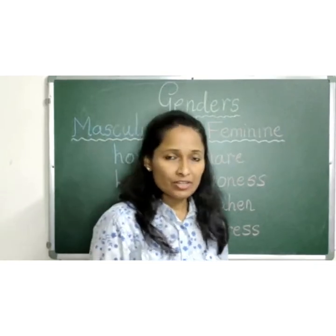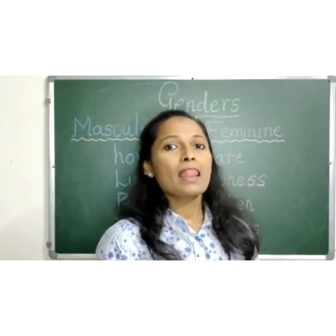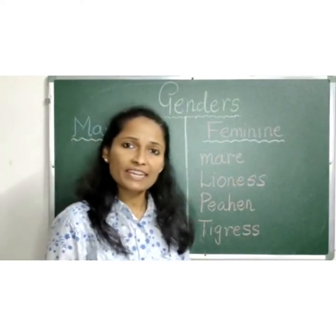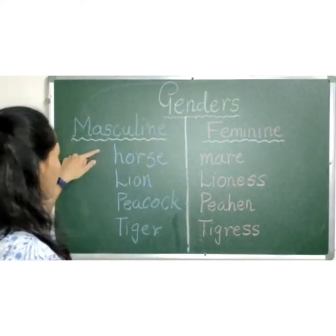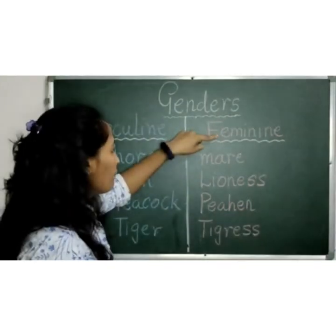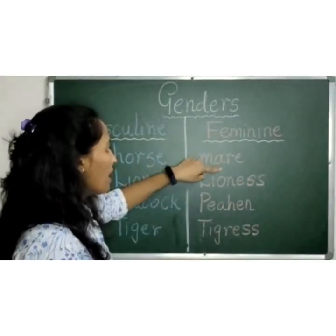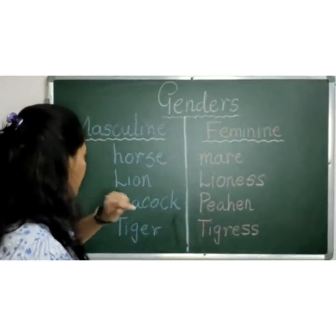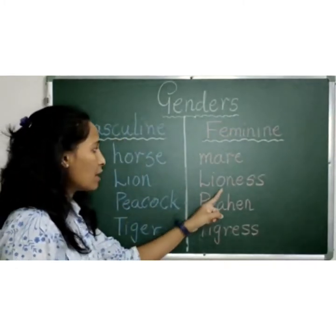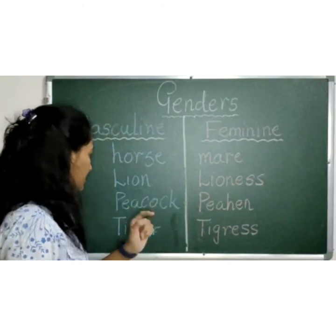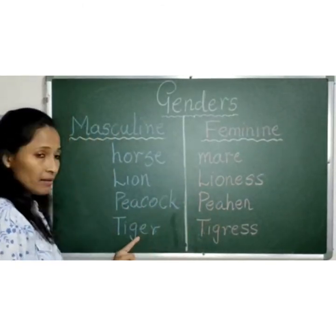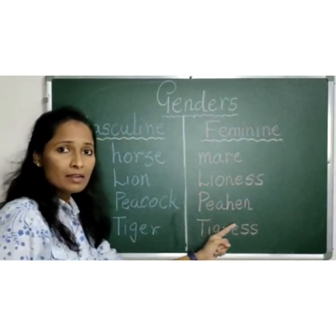Children, do you know something? Like humans, even animals also have genders. Horse is a masculine gender and mare is a feminine gender. Lion is masculine and feminine is lioness. Peacock — peahen. Tiger — tigress.